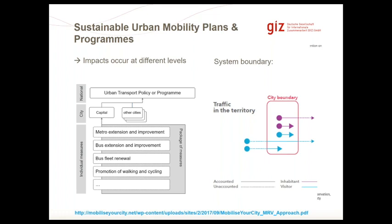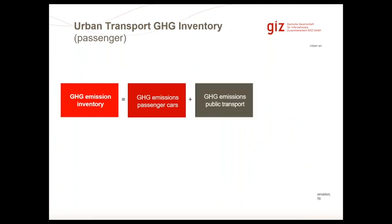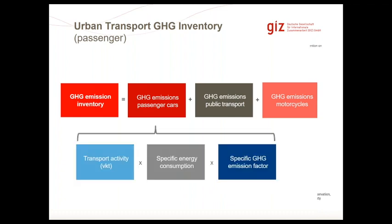The system boundary we look at is the traffic in the city territory. We look at all traffic and transport occurring within these boundaries — including traffic of inhabitants as long as it takes place in the city boundary, but also traffic of incoming visitors as long as they're in the city territory. This system boundary is most closely connected to the sphere of influence of the city government developing a sustainable urban mobility plan, which affects all traffic occurring in its own territory.